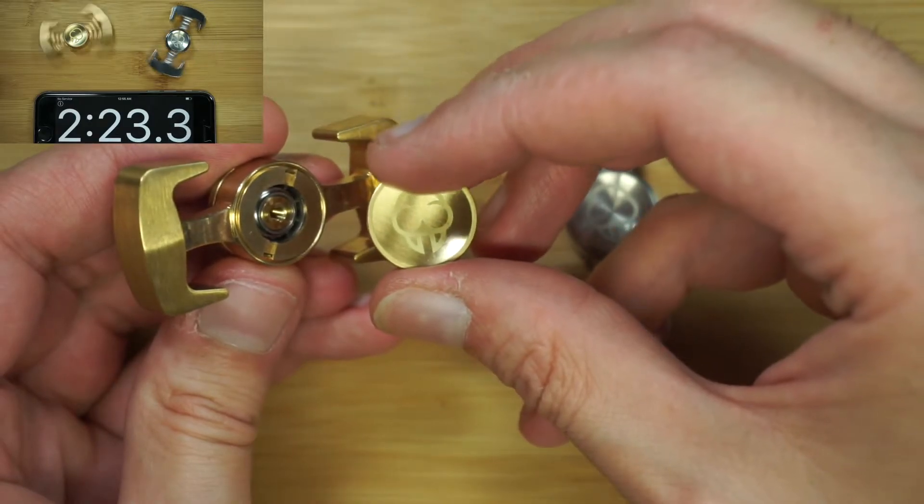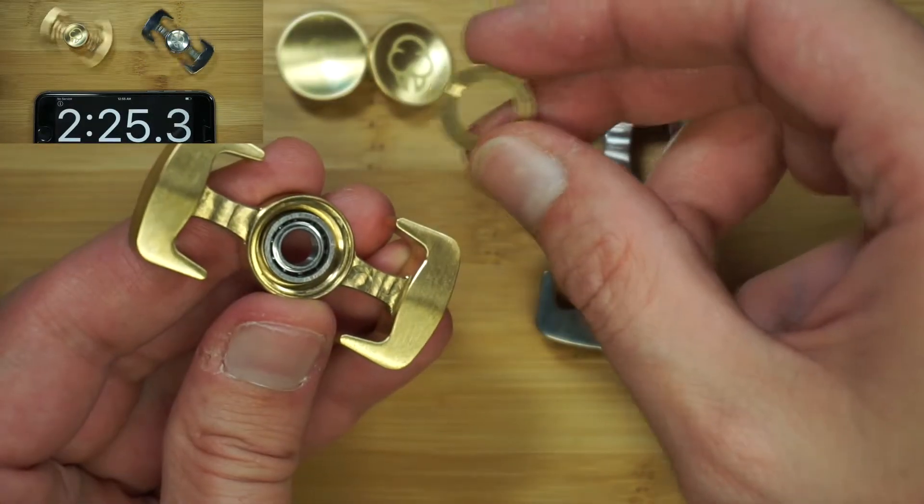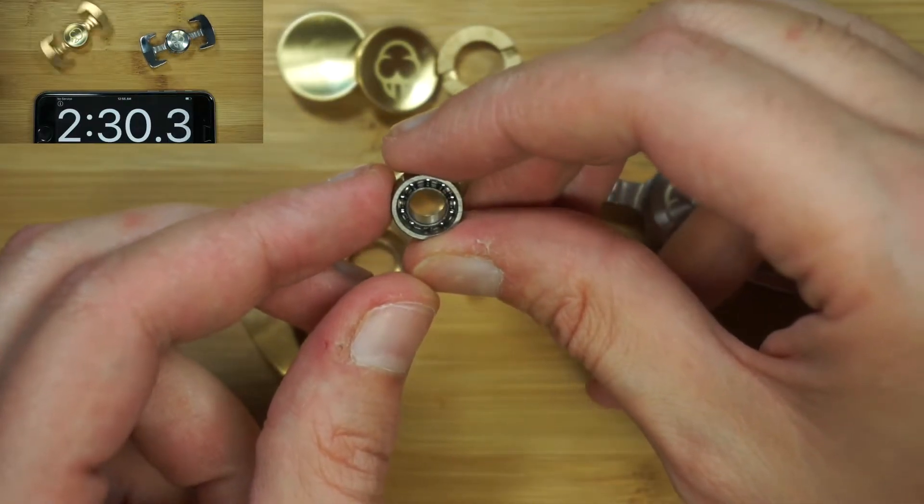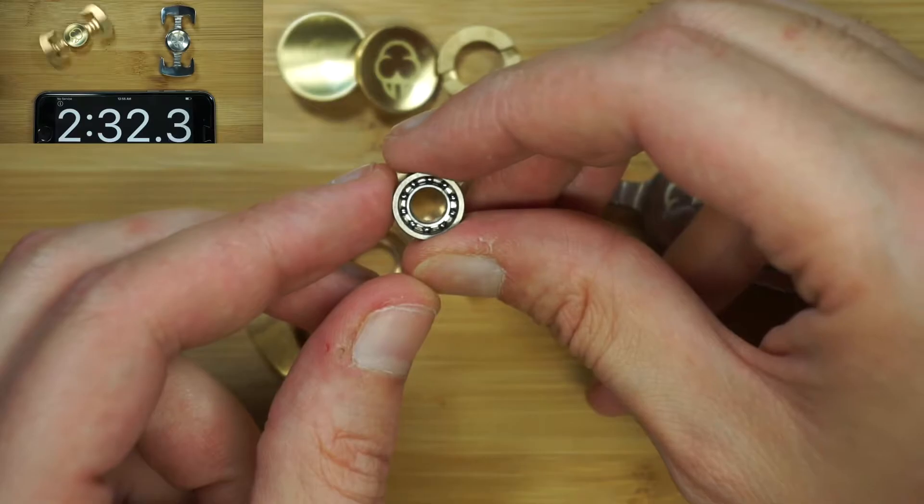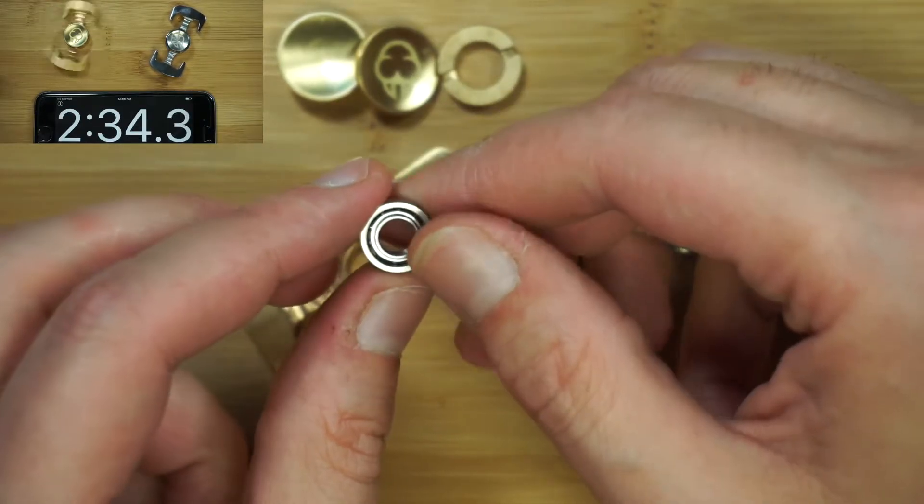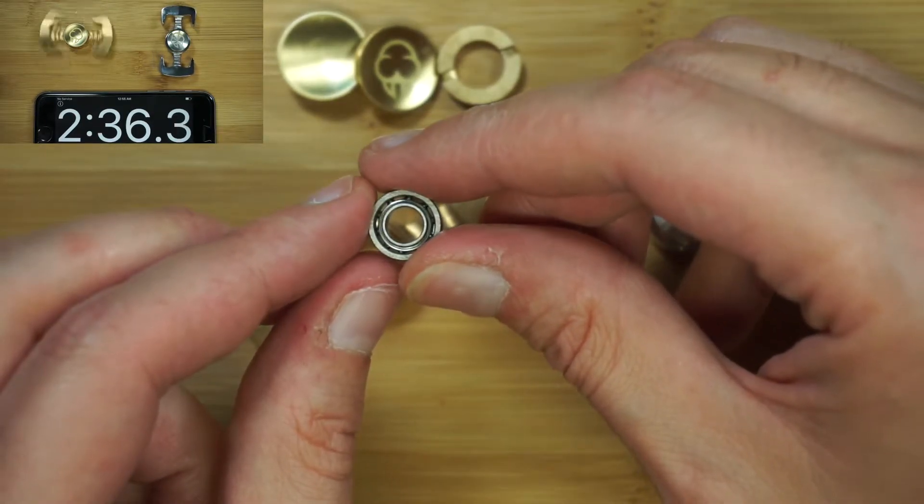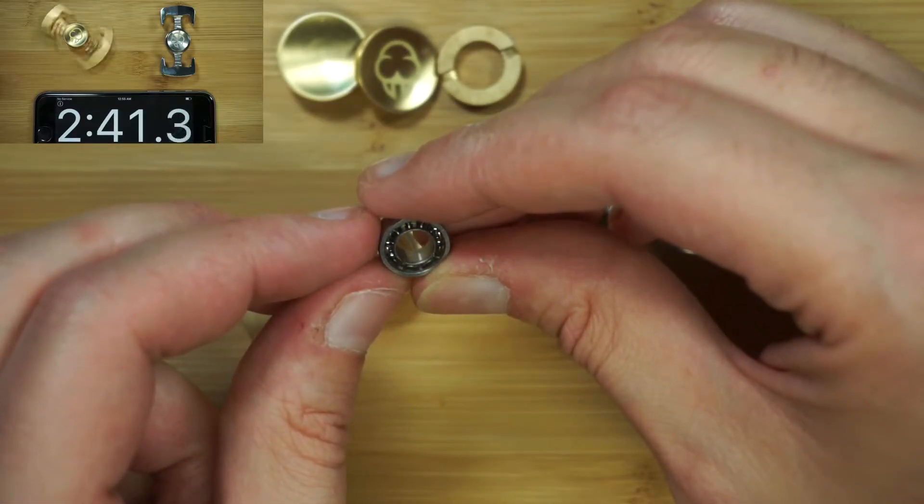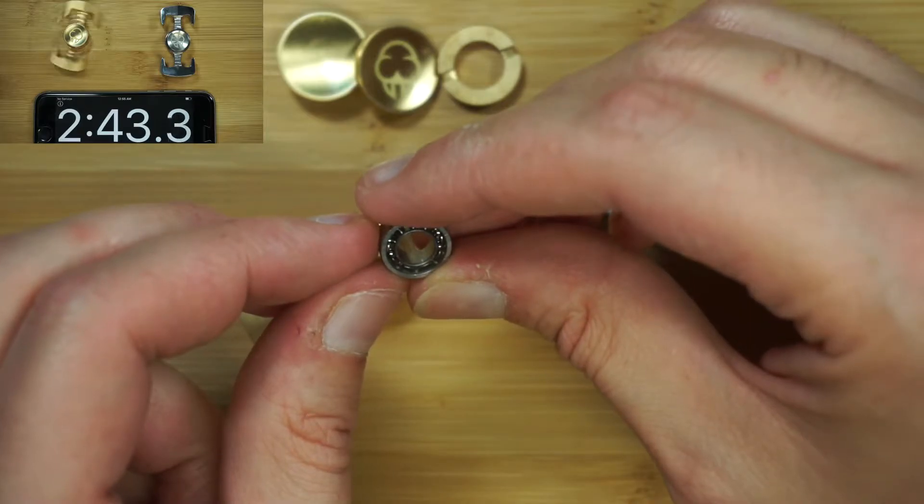On the brass one getting off button number one, button number two, retention ring and the bearing. On the bearing they went with the same style that the Very Dapper went with and I'm not a real fan of that one. For some reason it just doesn't seem to run as smooth and quiet. It doesn't seem to run as silent or quiet as a normal raced R188.